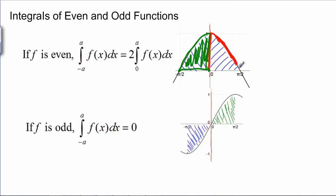What does that mean? Well, it means that if I want to find the total area, it's okay to just integrate from zero up to the point I'm interested in and then double my answer. That is, I can do the red area twice and that's the same as doing the red area and the green area.